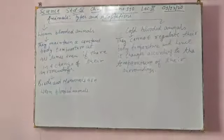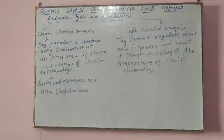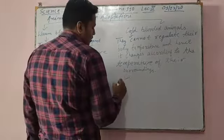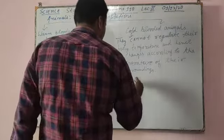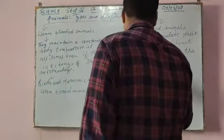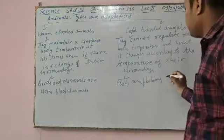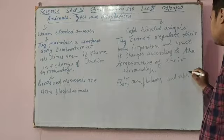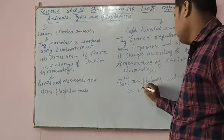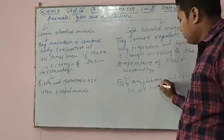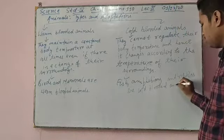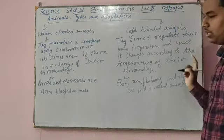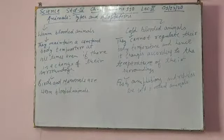Cold-blooded animals include fish, amphibians, and reptiles. Birds and mammals are warm-blooded animals.